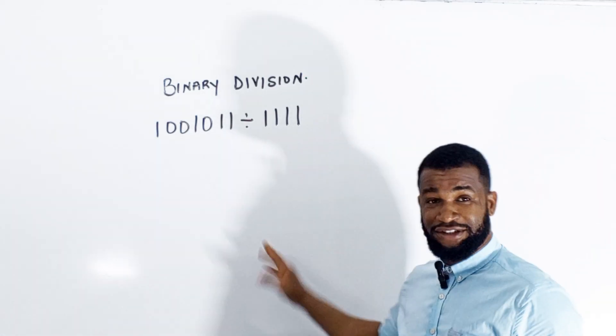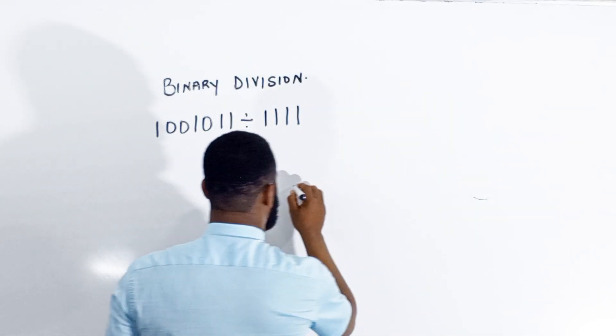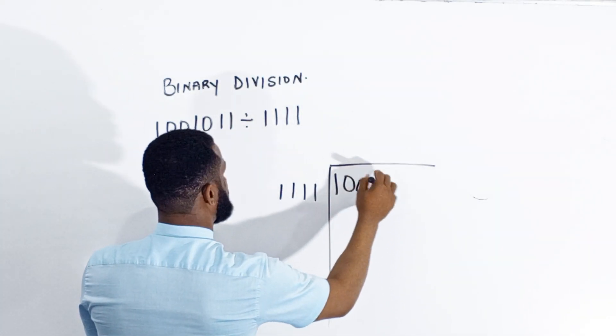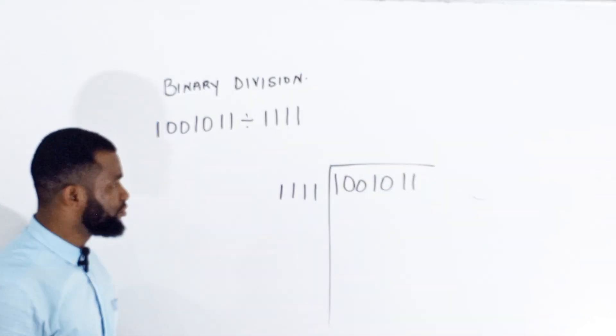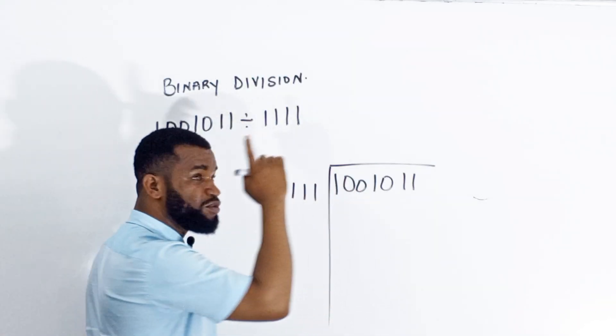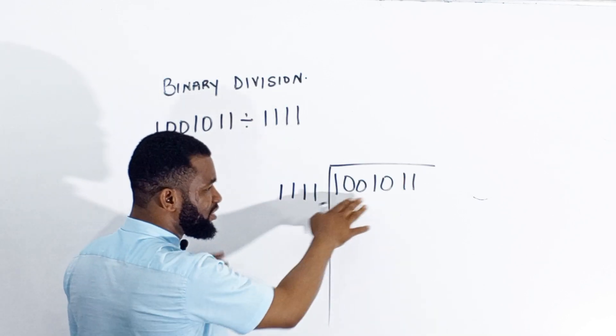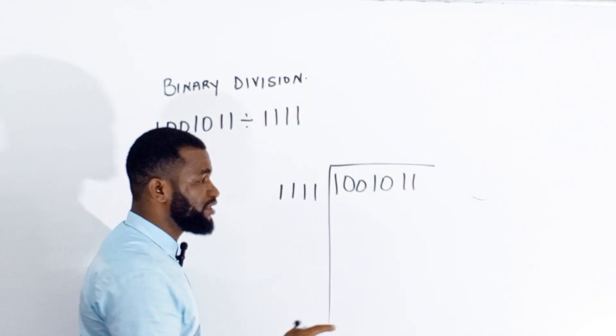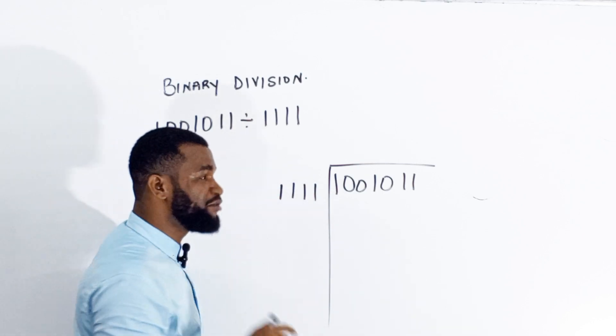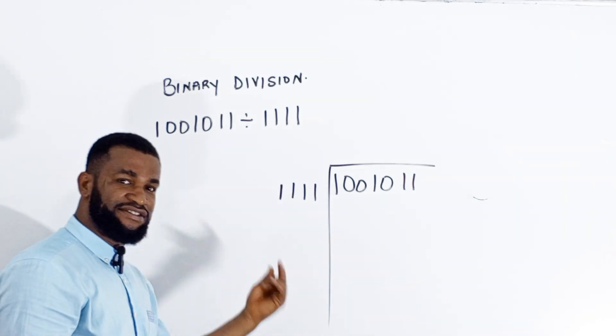Let us carry out the division of this binary. So I will start by saying 1111 divided by 1001011. In this binary division, your idea is that for you to call it 1, it must be greater than what is here. This is the divisor. This is the dividend, and the answer, the quotient, must be 1 whenever the dividend is greater than the divisor. I mean, what you are dividing is greater than what you are using to divide it. Then you write 1. But if it is not, you write 0.